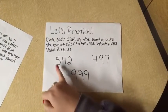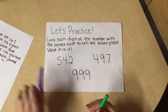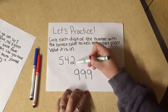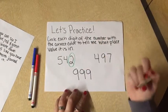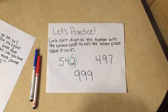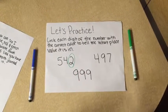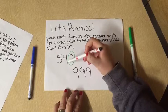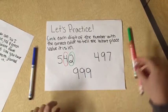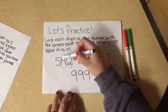Let's look at the first one. We have 542. So I'm going to start with the ones place, meaning I'll pick up my green marker, because the green represents our ones place. Now what's next? We have how many red tens place are there? Let's go circle the 4. Last but not least, we have the hundreds place with the blue marker. So circle the 5.